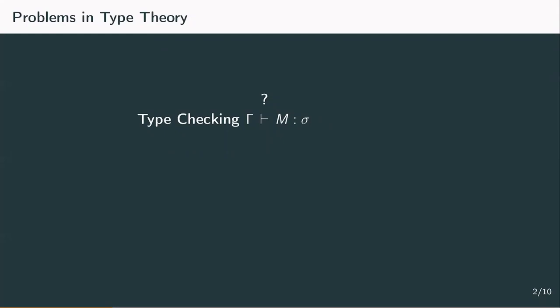One can actually reduce this problem to the case of only an empty context. Whenever we have a context gamma and some declaration x of type alpha, yielding some m of type sigma, we can also ask the question whether the context without this declaration yields lambda x of type alpha dot m of type sigma.